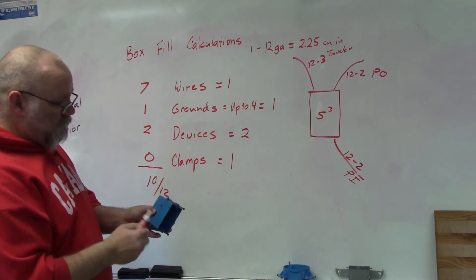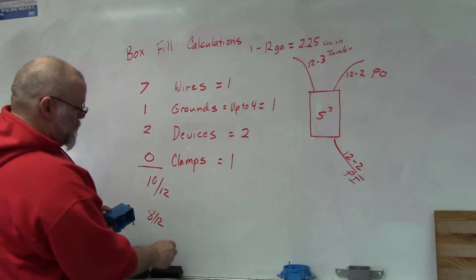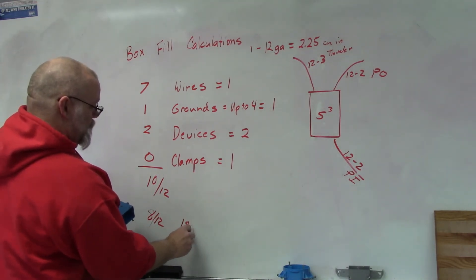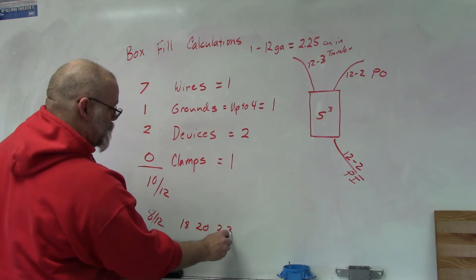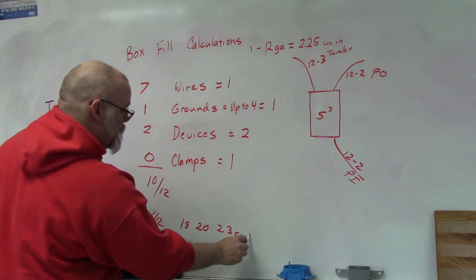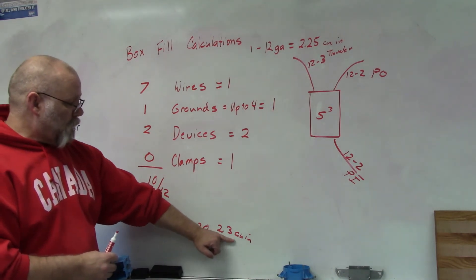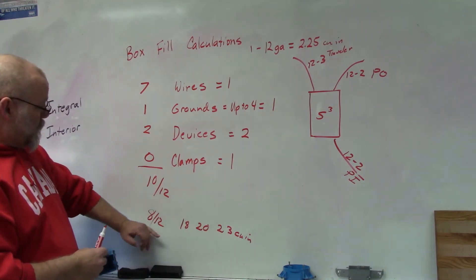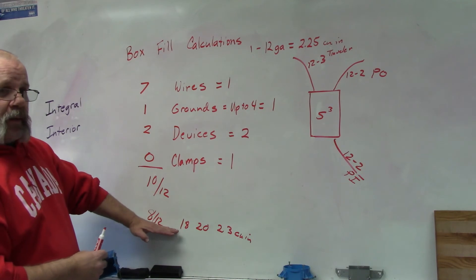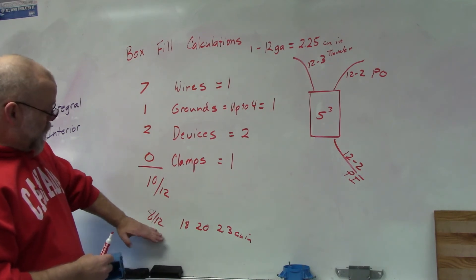Now the good thing about these single gang boxes is they come in three different sizes. You can get an 18, a 20, or a 23 cubic inch box. So if I get the biggest box at 23 cubic inches, it will probably fit this eight twelves.